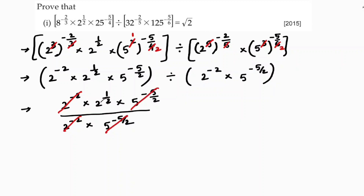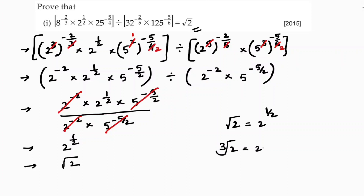So I'm left with 2 power minus 6 by 2, 2 power minus 5 by 2, and 2 power 1 by 2. Combining these, we get 2 power minus 6 by 2. Root 2, written in exponential form, is 2 power 1 by 2. If it were cube root 2, we'd write 2 power 1 by 3. So here we got 2 power 1 by 2, which is nothing but square root of 2.